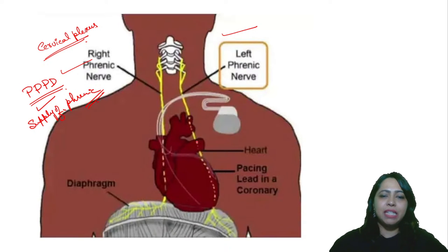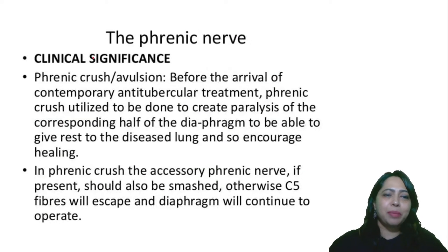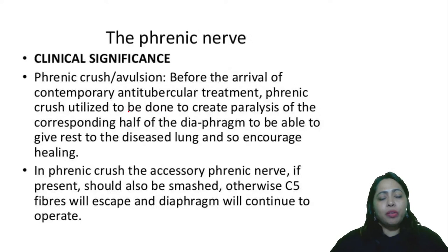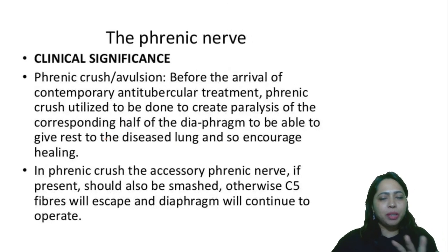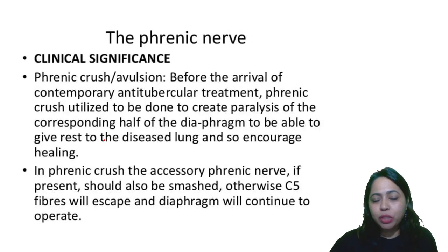In this picture, you can very clearly see what the phrenic nerve supplies — the heart, the diaphragm, and the pleura. For clinical significance: before contemporary anti-tubercular treatment, the phrenic nerve itself used to be crushed — the phrenic crush or avulsion — which created paralysis of the corresponding part of the diaphragm, giving rest to the diseased lung and encouraging healing.